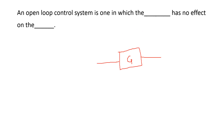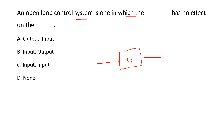Next: an open loop control system is one in which the output has no effect on the input. In an open loop system, the output depends upon the input but the input is independent of the output — so output has no effect on the input. Option A is the right answer.